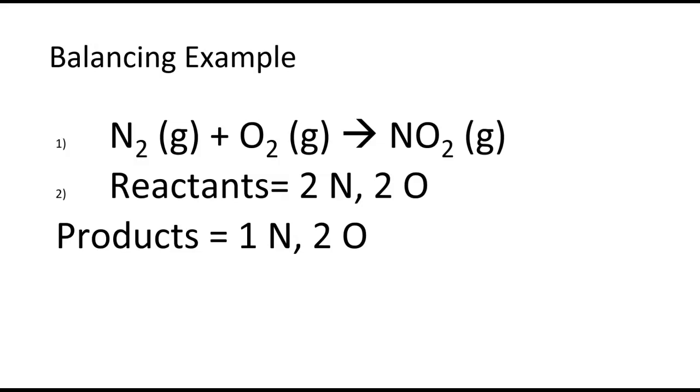In this example, I'm going to balance nitrogen gas reacting with oxygen gas to form NO2 gas. For the reactants, we have two nitrogens. We have two oxygens on the left. On the right, we have one nitrogen because there's only one nitrogen in NO2 and two oxygens.